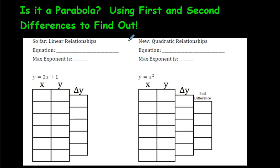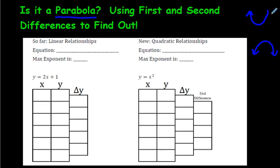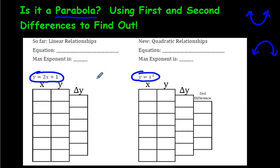Hi folks. In this video we're going to look at something called first and second differences. You may have heard about it in your own math class — we're just going to clarify what it means right here. In the end, we're going to be asking the question: is it actually a parabola? A parabola is that shape that looks like this, or like this generally. We're going to be able to identify whether or not an equation is a parabola or not.